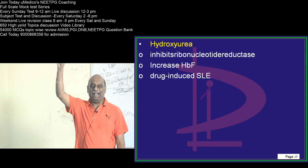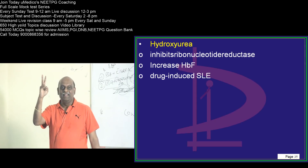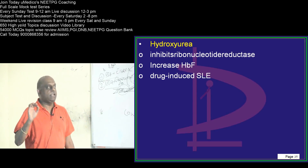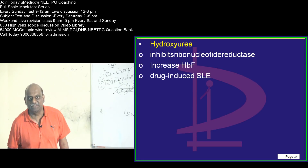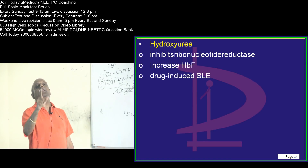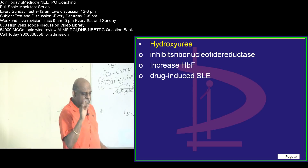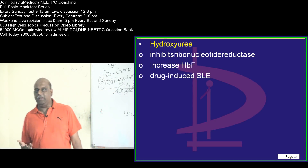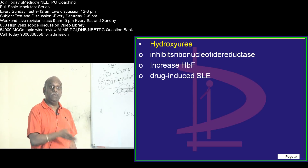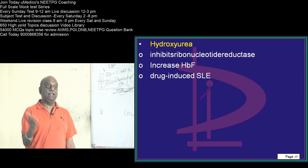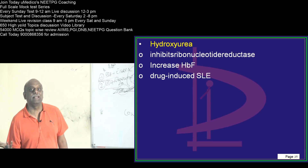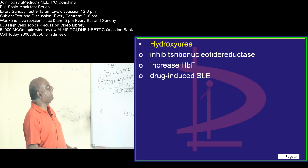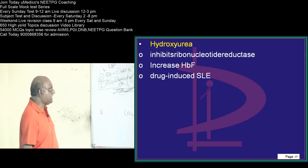Hydroxyurea — two bullets. What is the mechanism? Hydroxyurea inhibits ribonucleotide reductase. That is the reason you need to remember hydroxyurea. Mechanism is a very favorite question. And why do you use hydroxyurea in sickle cell anemia? Because hydroxyurea increases fetal hemoglobin. Fetal hemoglobin will not sickle, unlike adult hemoglobin. So that is the reason we use it in sickle cell anemia.